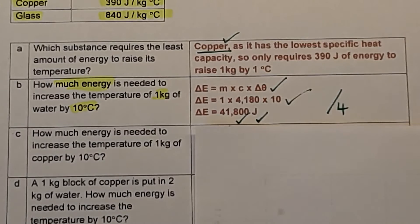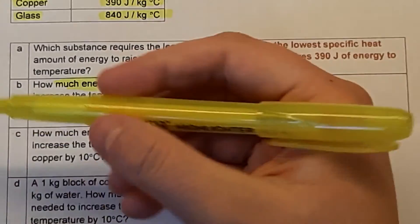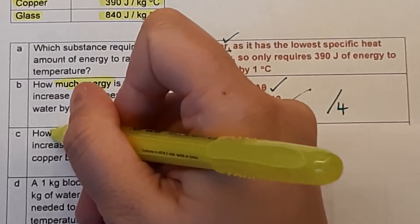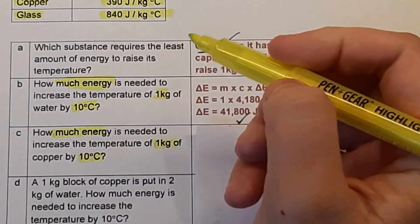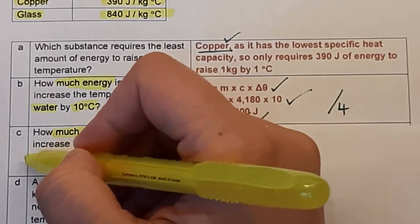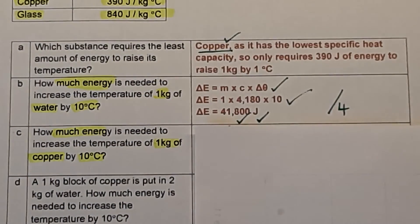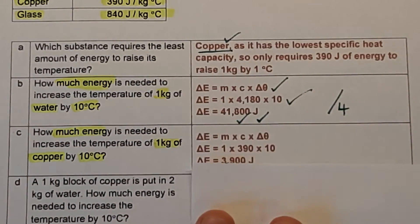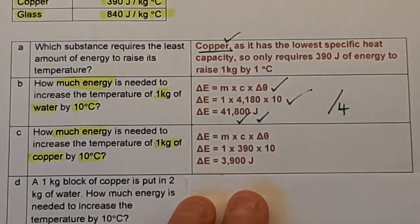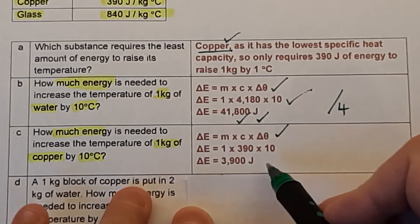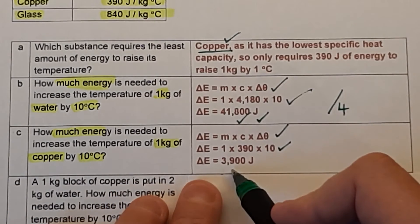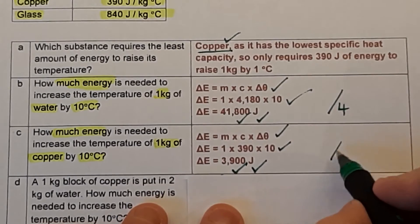Question C: how much energy to increase 1 kg of copper by 10°C? Same equation: ΔE = 1 × 390 × 10 = 3,900 J. Mark out of four. Question D: a 1 kg block of copper is put into 2 kg of water. How much energy is needed to increase the temperature by 10°C? This requires two separate calculations — one for the water and one for the copper — then add them together.